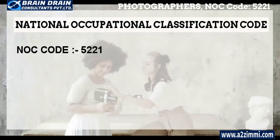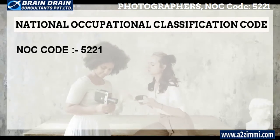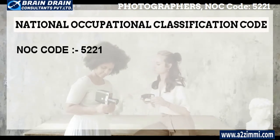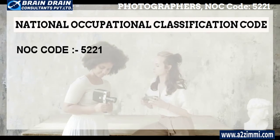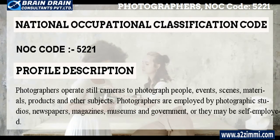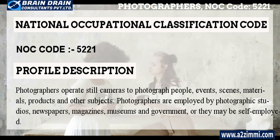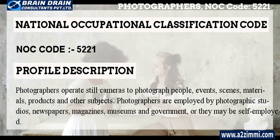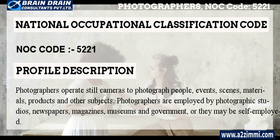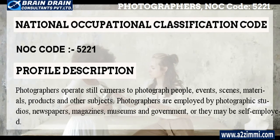The National Occupational Classification Code or NOC code for the profile of photographers is 5221. As per Statistics Canada, the profile description of photographers is as follows: Photographers operate still cameras to photograph people, events, scenes, materials, products, and other subjects.